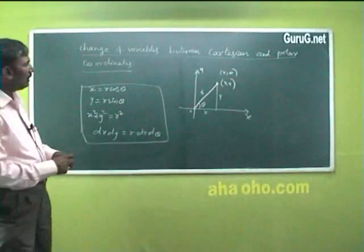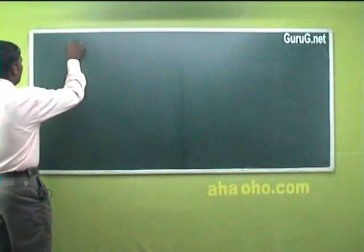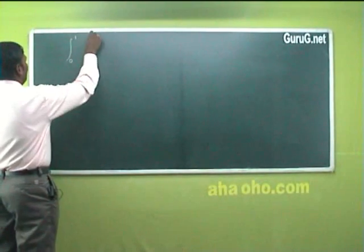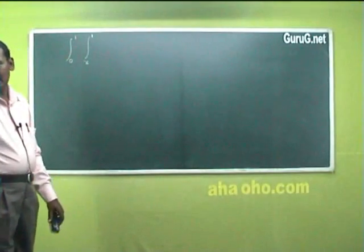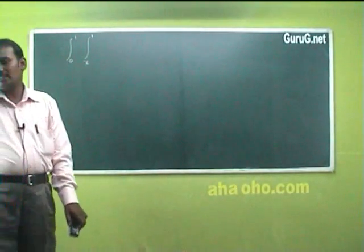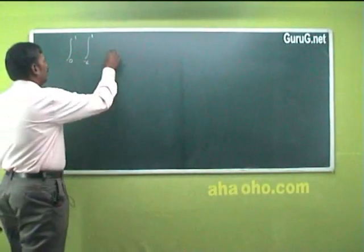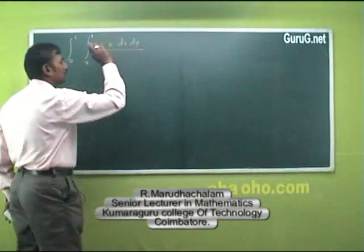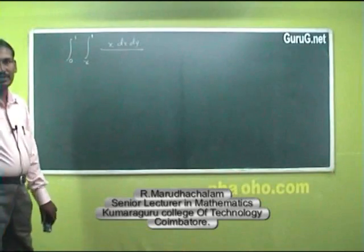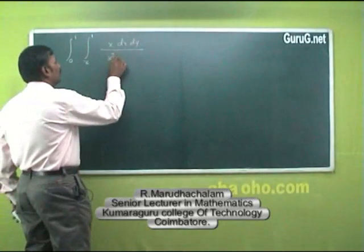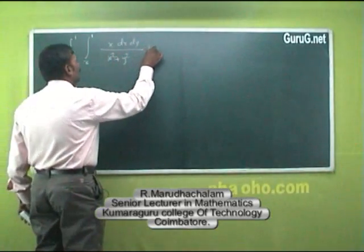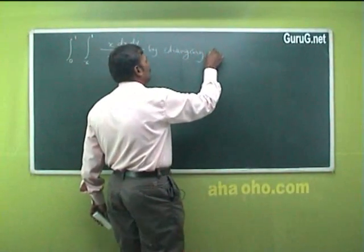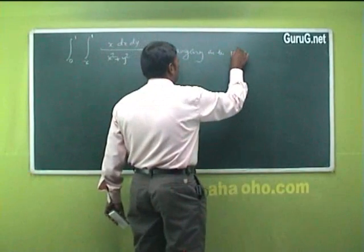Now evaluate the integral from 0 to 1, integral from x to 1, of x dx dy divided by x² plus y², by changing into polar coordinates.